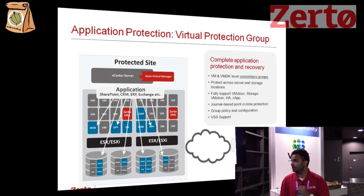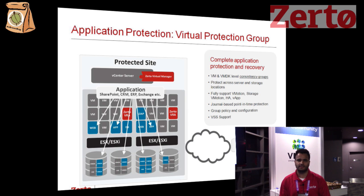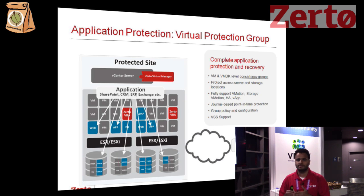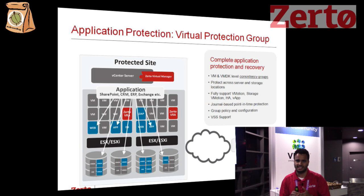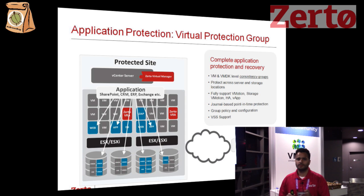A key concept is the virtual protection group. Think of protection groups as a logical consistency grouping of all the VMs that come together to make an application — for example, a database server, a web server, and an application server that could be spread across multiple security tiers and infrastructure. A VPG or virtual protection group translates into an application. By putting them into this group, we maintain what we call write-order fidelity across all those VMs — the order in which data is written to disk is preserved at the DR site. Very important from a consistency point of view.